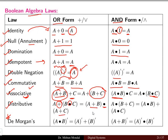De Morgan's laws are very famous and we will study them now in summarized form. The first law states: if you take the complement of A dot B, you get A bar plus B bar. Similarly, the complement of A plus B equals A bar dot B bar.